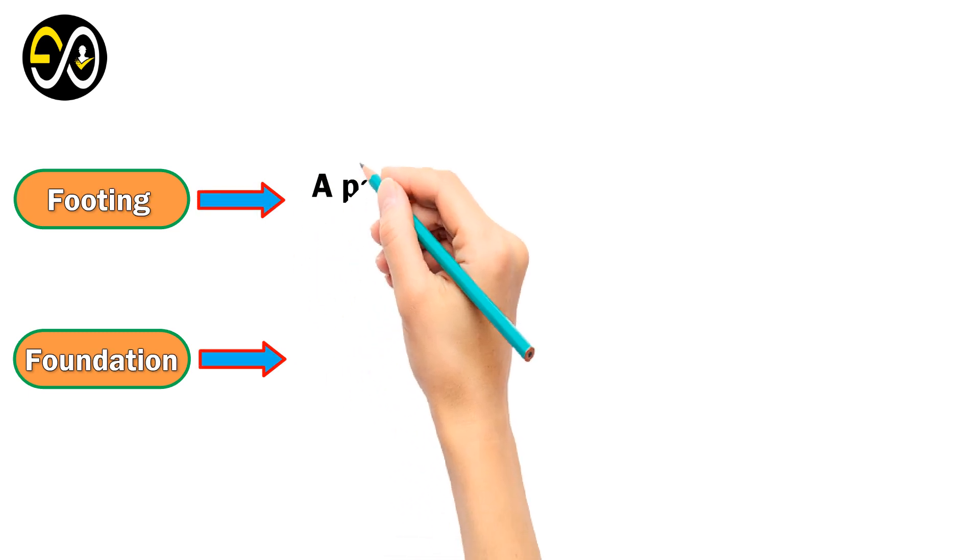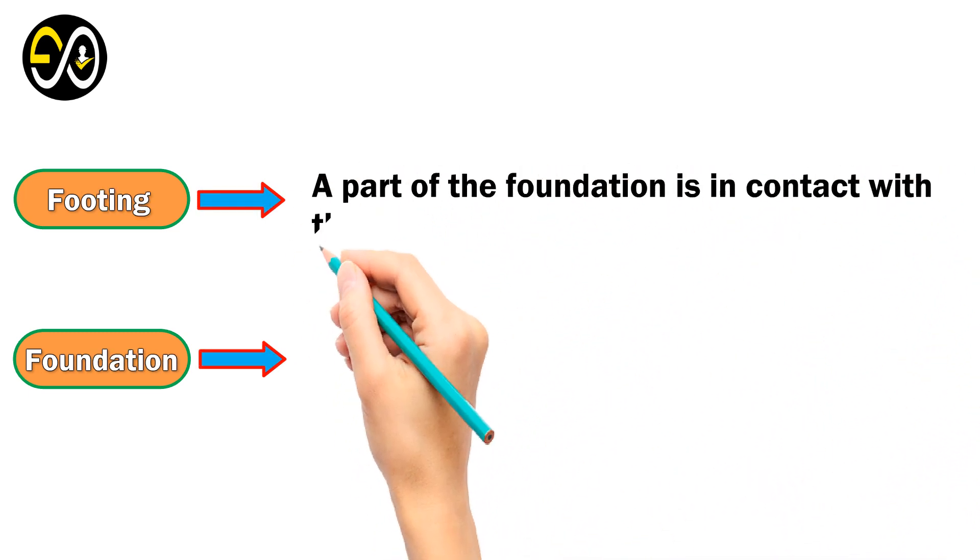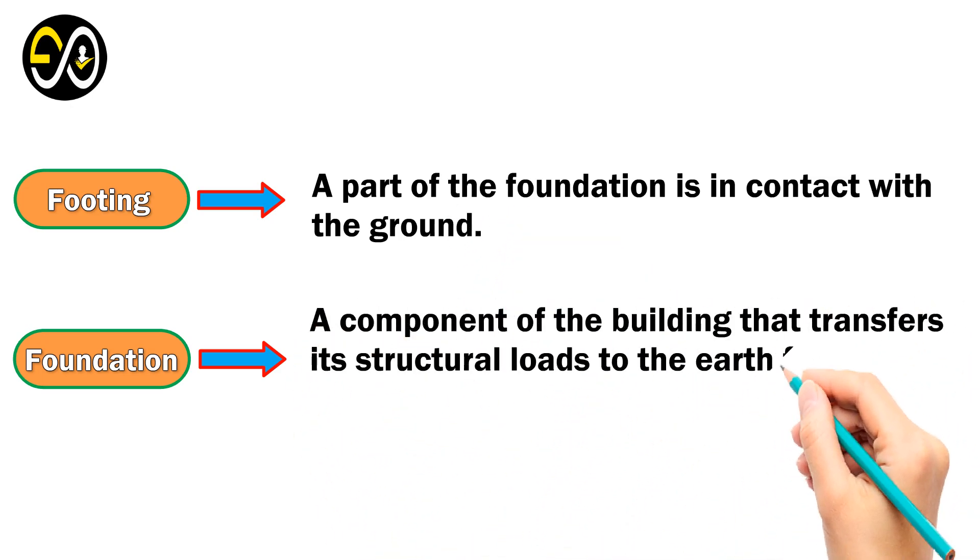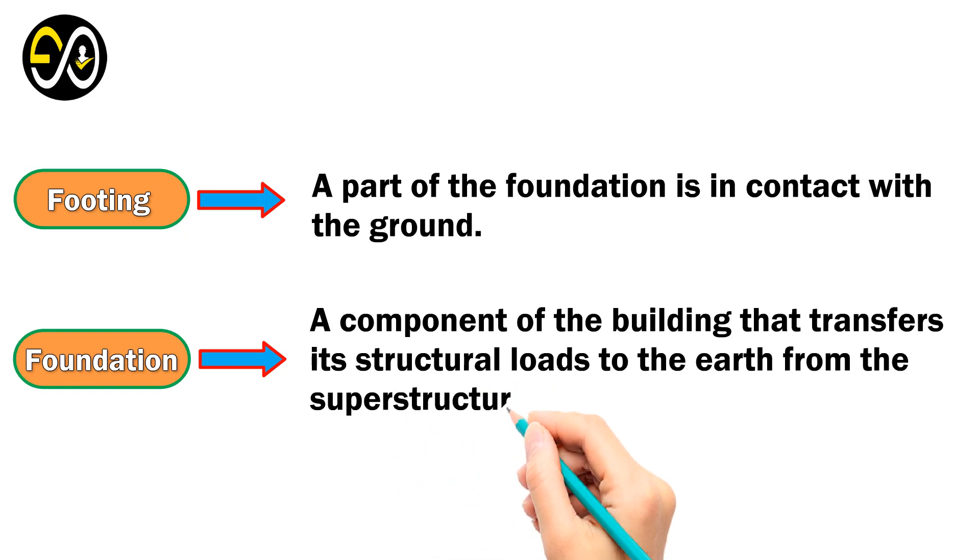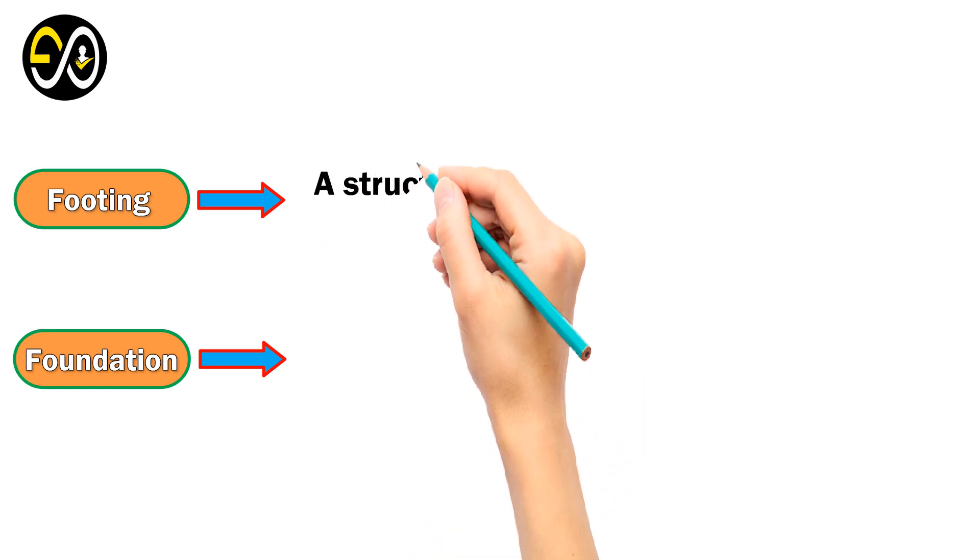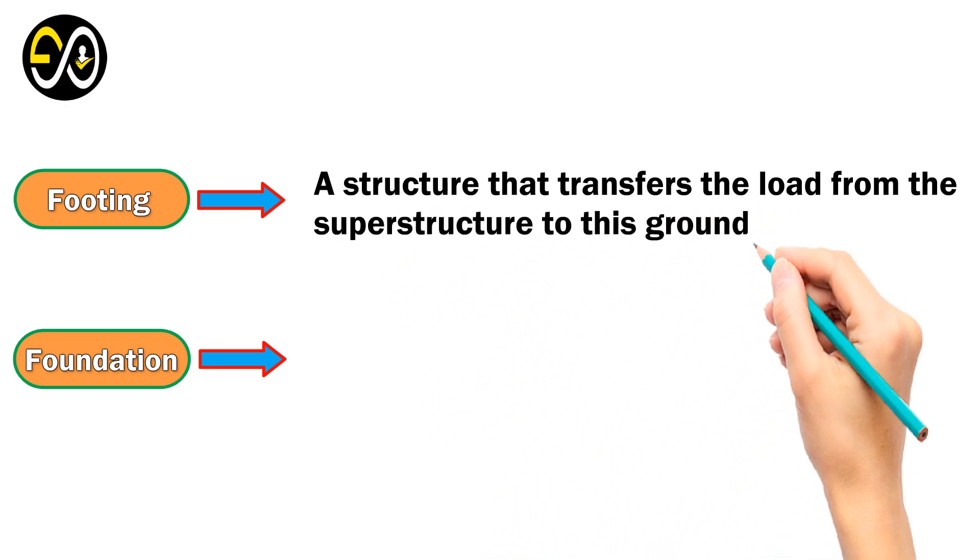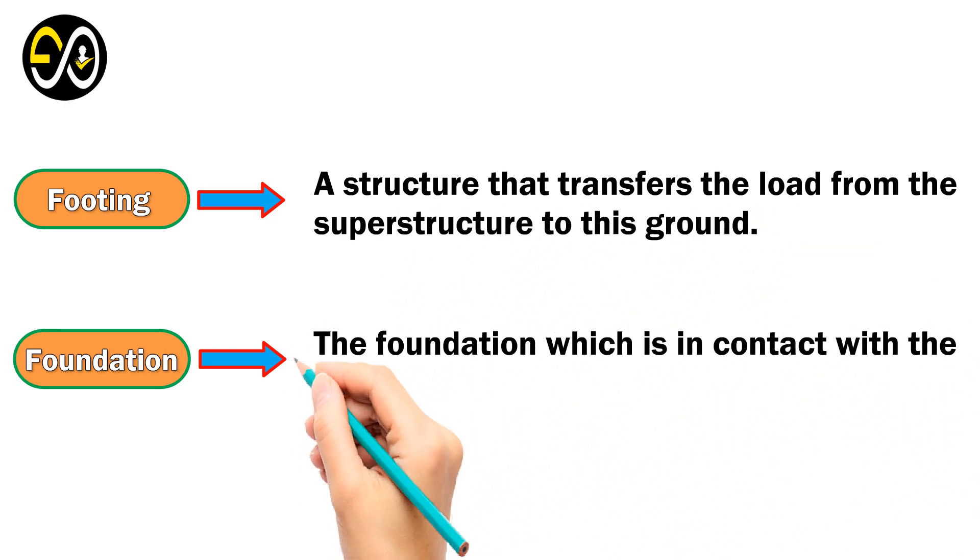Here are some of the differences between the footing and foundation listed below. A part of the foundation is in contact with the ground. A component of the building that transfers its structural loads to the earth from the superstructure. A structure that transfers the load from the superstructure to the ground. The foundation which is in contact with the earth.